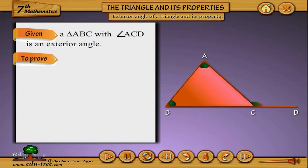Students, we have given a triangle ABC with angle ACD is an exterior angle. To prove: angle ACD equals angle 1 plus angle 2.